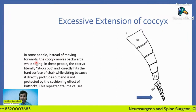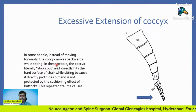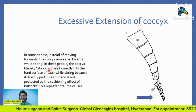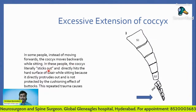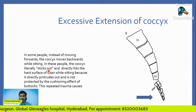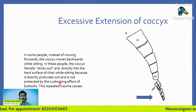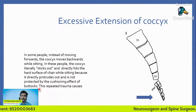Observe this — this is the reverse situation. In some people, instead of moving forwards, the coccyx moves backwards while sitting. In these people, the coccyx literally sticks out and directly hits the hard surface of the chair while sitting, because it directly protrudes out and is not protected by the cushioning effect of the buttocks. This repeated trauma causes pain.